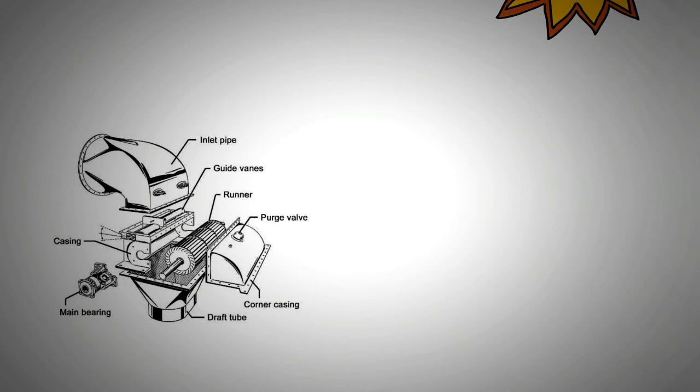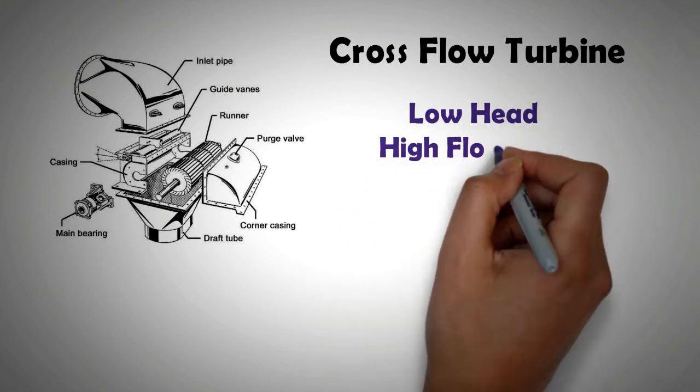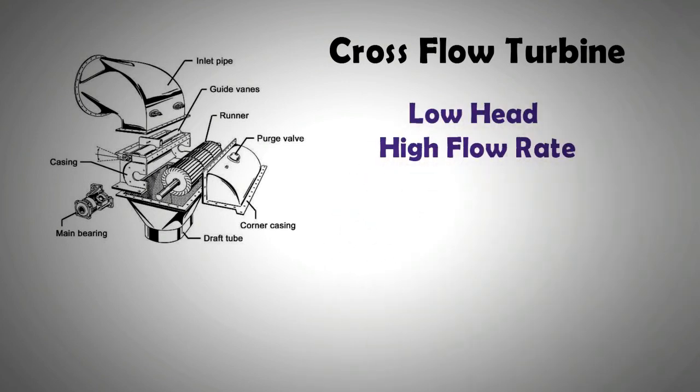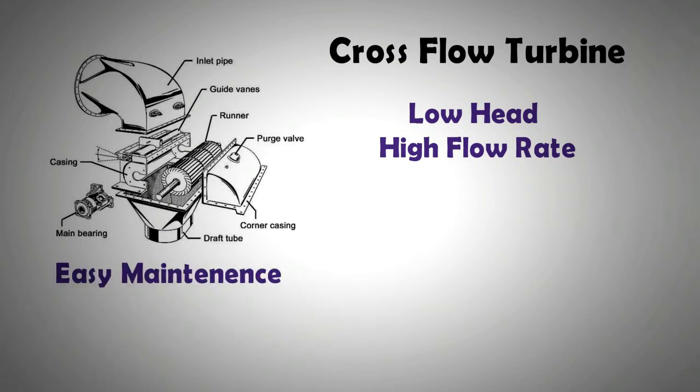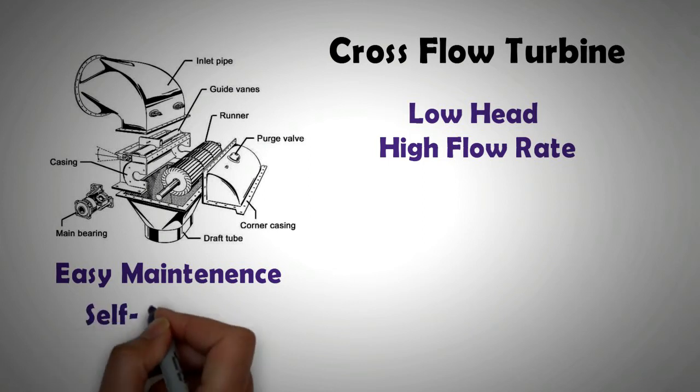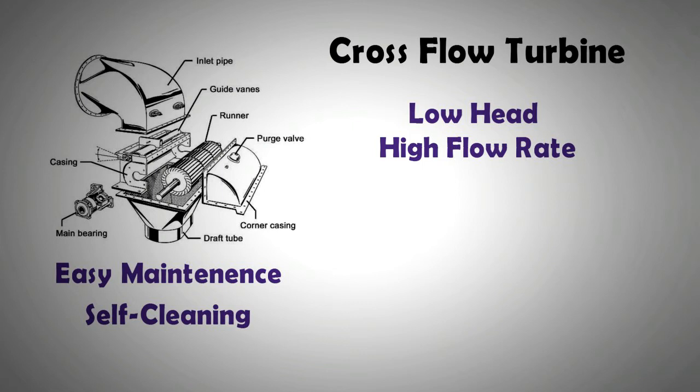And lastly, there is the cross flow turbine or the Banki turbine. It is a slow moving machine which is well suited for locations with a low head of water but with high flow rate. Being a slow mover, the turbine is easier to maintain as the bearings don't need to be replaced often. Furthermore, the turbine is self-cleaning and gets clogged up less frequently compared to other turbines. The efficiency of cross flow turbine and the Pelton wheel is lower than that of Francis turbine and Kaplan turbine.